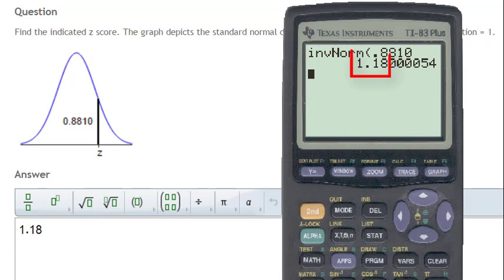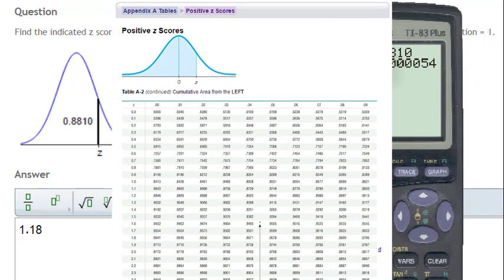We will adopt this convention that all z-scores will be rounded to the hundredths decimal place. The reason for adopting this convention is so that our answers gotten using the TI-83 or 84 calculator are consistent with answers gotten using the more conventional z-score tables.